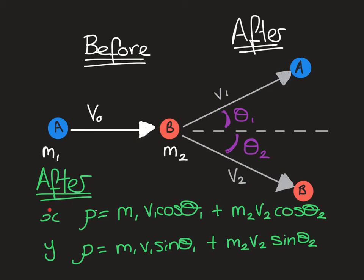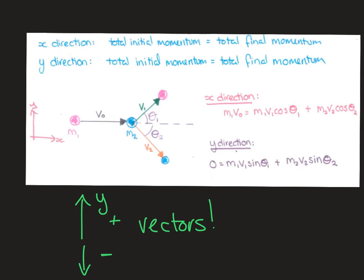That gives us our expression for the total momentum in the X plane after the collision. In the Y plane it's the same approach but we use sine of the same angles. So we have M1 V1 sin θ1 as the momentum in the Y plane for A, and M2 V2 sin θ2 as the momentum in the Y plane for B. Putting the before and after expressions together: in the X direction, M1V0 = M1 V1 cos θ1 + M2 V2 cos θ2. In the Y direction, 0 = M1 V1 sin θ1 + M2 V2 sin θ2.